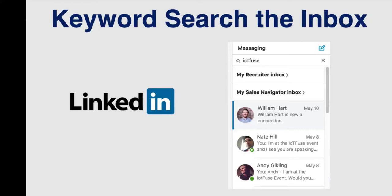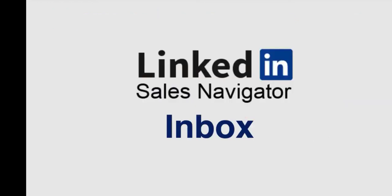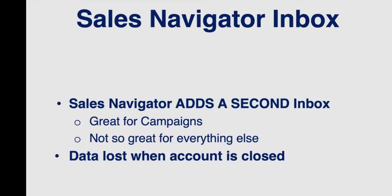A big part of what we do in our messaging is put a keyword in there so we can filter strategically to find things related to a particular campaign. For example, the word 'intriguing' might be a keyword in a campaign we run — no one can use that word for anything else. You can also search for a person's name to pop up their conversation right to the top. What we've described so far is pretty much good for everybody on the free LinkedIn.com. Let's get to where it gets a little more involved — the Sales Navigator inbox.